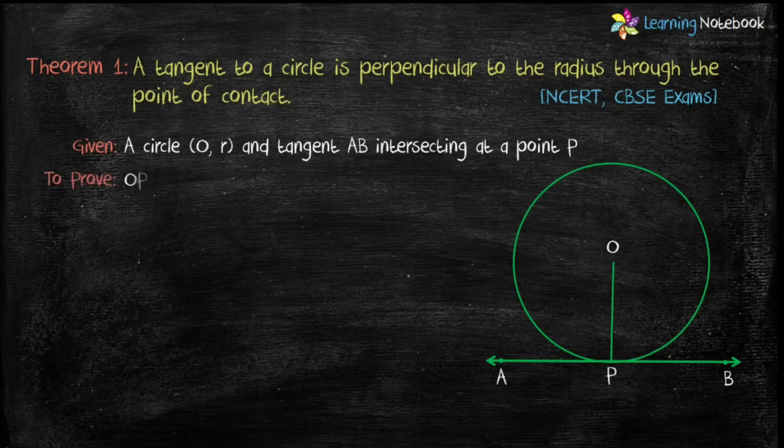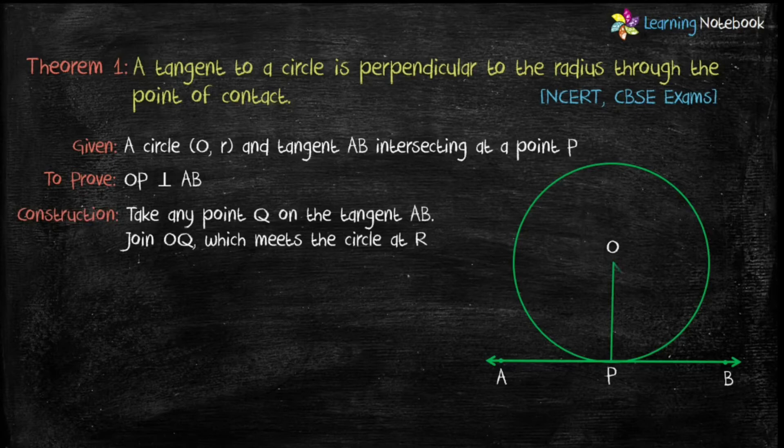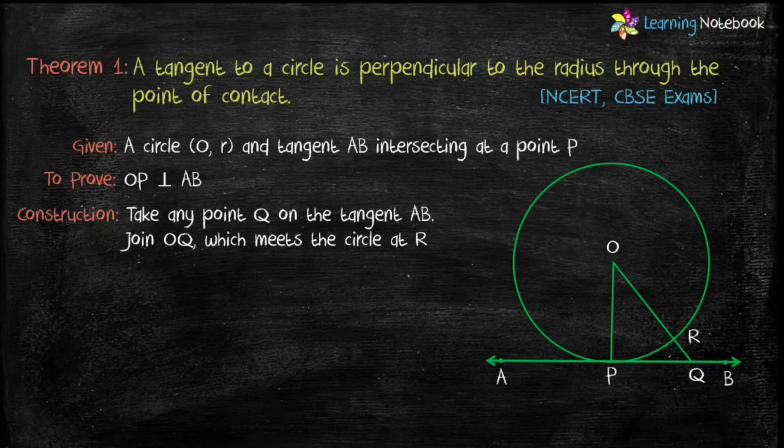We have to prove OP is perpendicular to AB. To prove this, let's take any point Q on the tangent AB. Now, join OQ which meets the circle at R. Now, let's prove it.